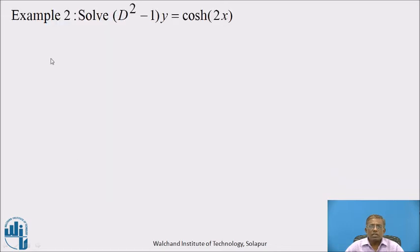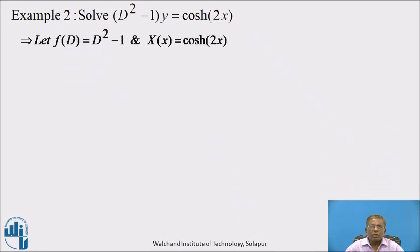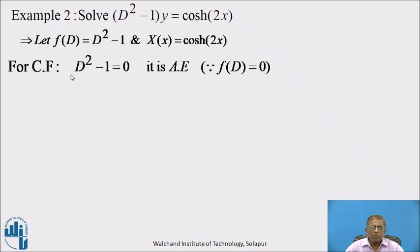Now let us consider Example 2. Solve the differential equation (D² − 1)·y = cosh(2x). Again, it is of the type f(D)·y = X(x). Here, f(D) = D² − 1 and X(x) = cosh(2x). For the complementary function, we write the auxiliary equation by equating f(D) = 0: D² − 1 = 0.